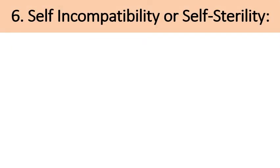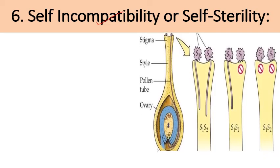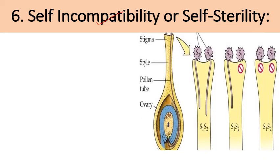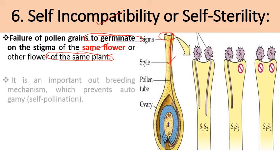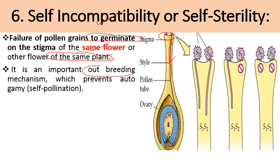The next adaptation for cross pollination is self-incompatibility or self-sterility. Here the pollen of the same flower or same plant is unable to germinate on the stigmatic surface, or the pollen tube is unable to penetrate the stigmatic surface. It is a failure of a pollen grain to germinate on the stigma of the same flower, or the pollen tube is unable to reach the egg and has no effect on fertilization. This is an important outbreeding mechanism which prevents autogamy — self pollination — and allows allogamy, that is cross pollination.